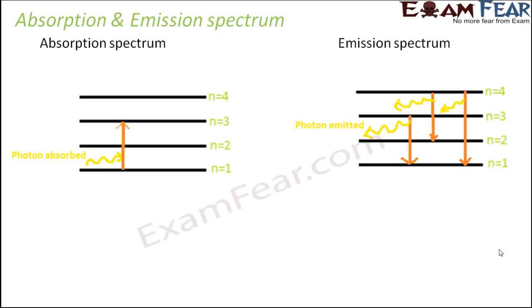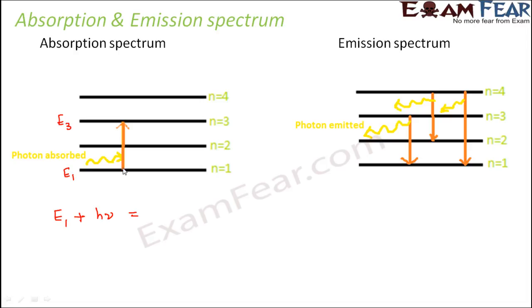How do we mathematically describe an absorption spectrum and an emission spectrum? In the absorption spectrum, the energy at the ground level is E1 and the energy at the excited state is E3. When additional energy — the energy of the photon — is given to the ground state, the electron jumps to the excited state E3. So we can say E3 minus E1 is equal to h·ν.